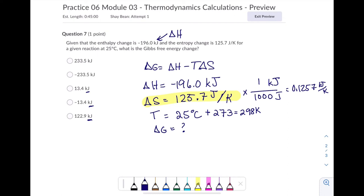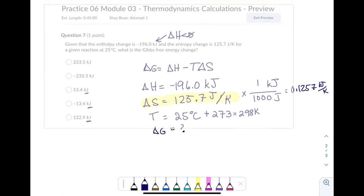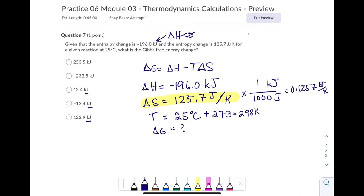You have a delta H that is negative, and that is a driving force for a spontaneous reaction. You have a delta S. Sorry, messing this up. That is positive. That is a driving force for a spontaneous reaction.